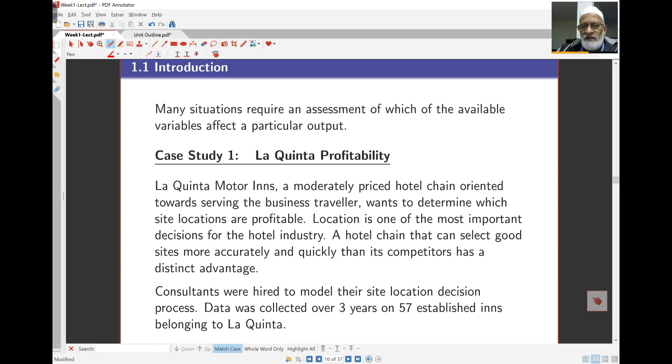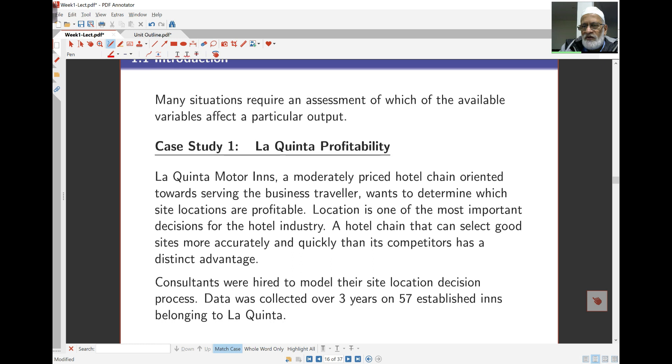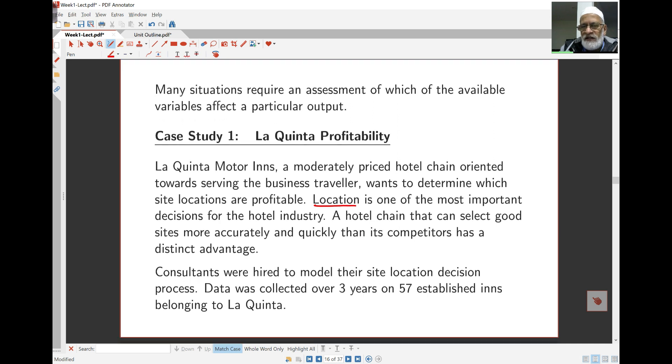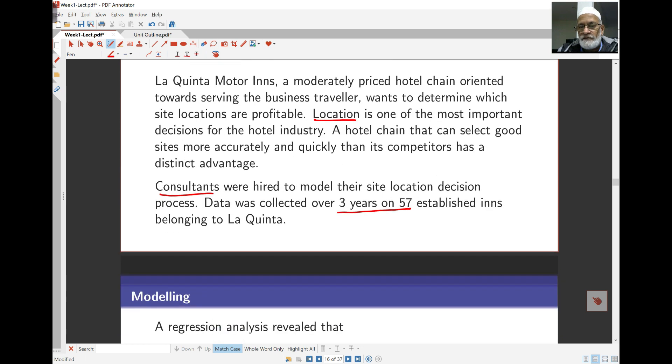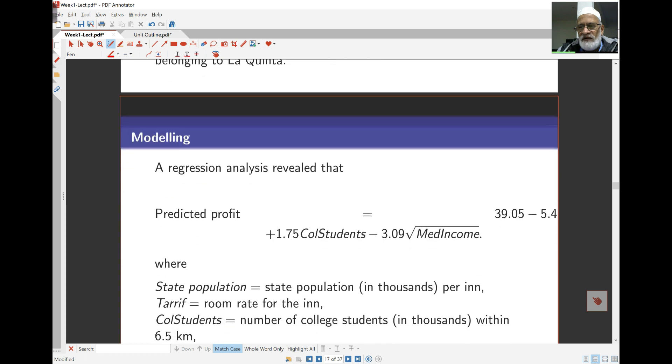Here's an example. La Quinta Motor Inns is a moderately priced hotel chain and they're looking to see which locations make the most profits. Location is one of the most important aspects of the hotel industry. They hired consultants who then collected data over three years on 57 established inns belonging to La Quinta. This is a proper job. Good practice taking data over a long period of time and hiring consultants who know what they're doing.